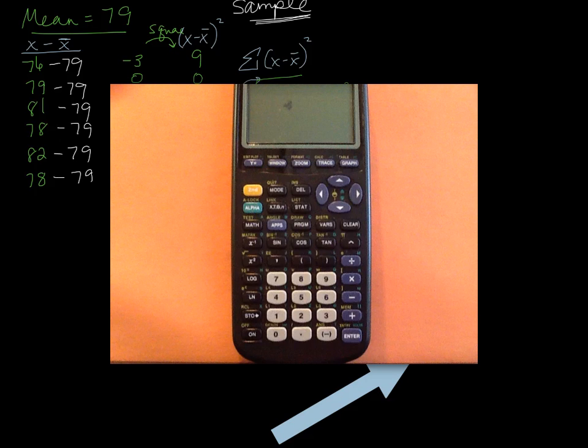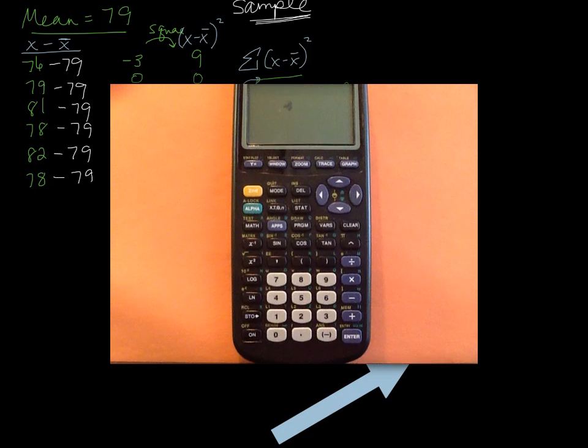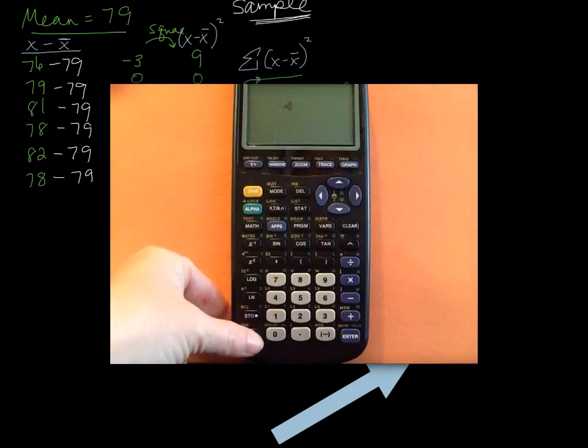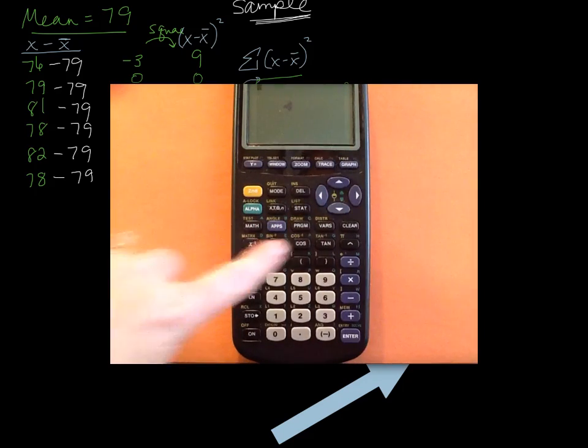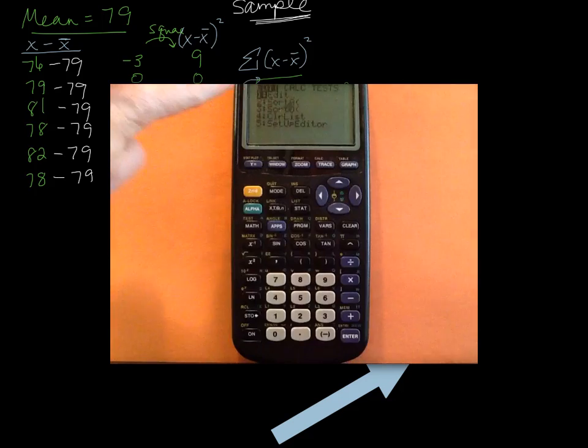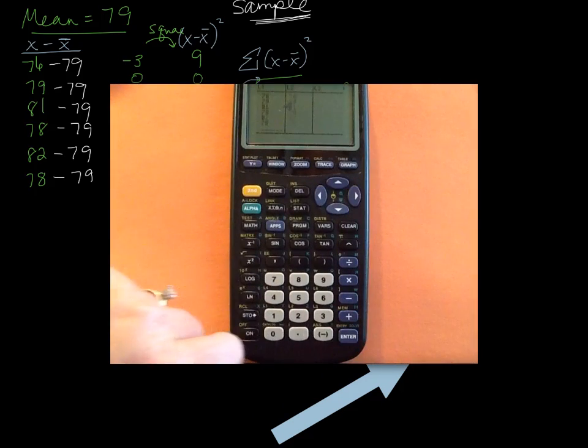Get our video ready. Ready? Turn it on. That's a minor detail, I guess. Hit the stat key. You want to make sure that you go to edit so you can put your list of numbers.